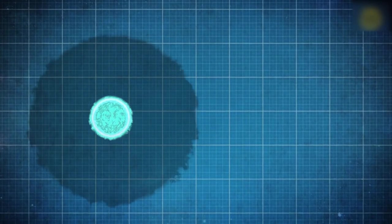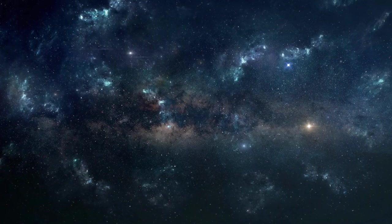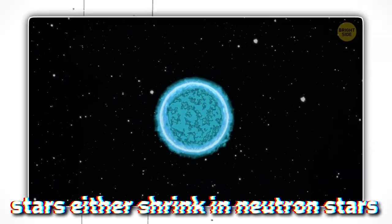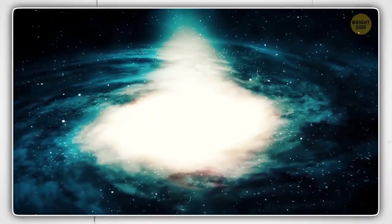Black holes and neutron stars are two of the universe's densest, most extreme objects, and they both begin as massive stars. When these stars run out of fuel, they explode as red supergiants. Following that, the stars either shrink into neutron stars or collapse into black holes, depending on their original mass.